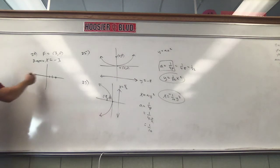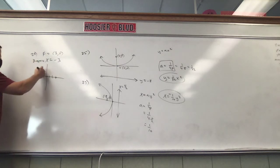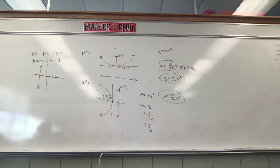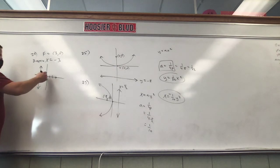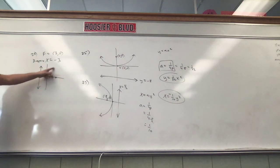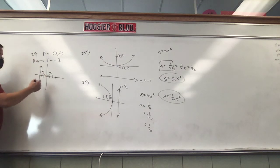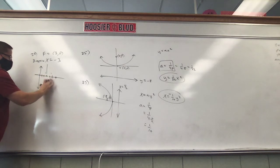The parabola always goes away from the directrix. The focus is the point inside the parabola; the directrix is a line outside the parabola. The distance from the vertex to the focus and the vertex to the directrix is always the same. With the directrix on the left and the focus on the right, this parabola has to open to the right.